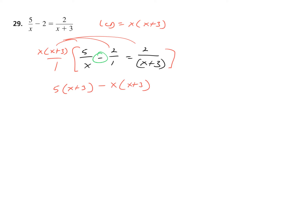The only thing that's going to happen is we need to make sure to distribute that minus with that product. And the 2 that was there: equals — binomial X plus 3 simplifies out — leaving me 2X. So 5X plus 15 minus 2X squared minus 6X equals 2X.